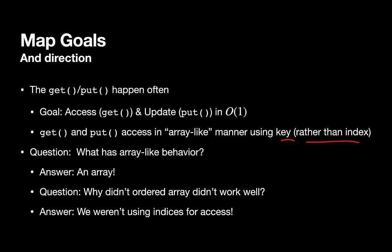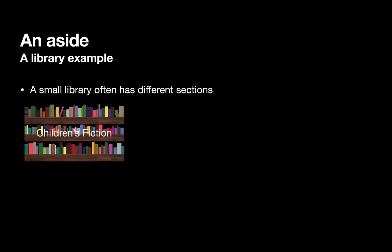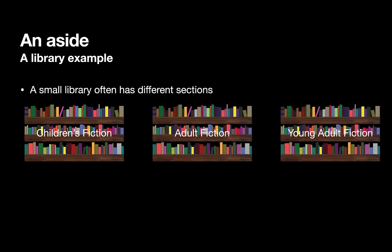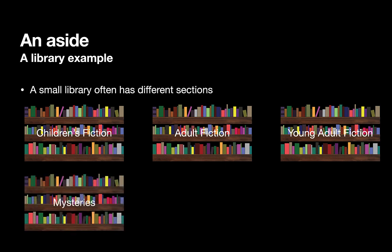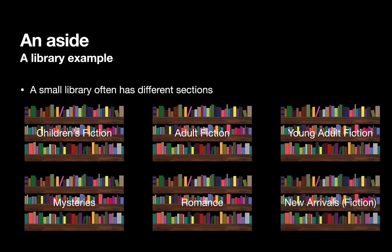So as a little aside of what I mean by that, let's think about a library example. I used to work in a small library, and small libraries often have several different sections for different styles of books. For example, we had a children's fiction section, and I'm only going to really focus on fiction here. We also had adult fiction, and then there was also young adult fiction. In addition to the adult fiction, there was also a mystery section, which was just mysteries as the name implies. There was also another section full of just romance books, and then there was a set of shelves purely for new arrivals, which were usually things on the current bestseller list.